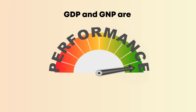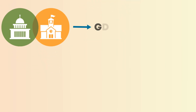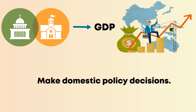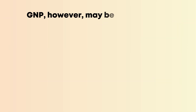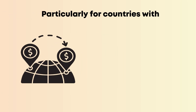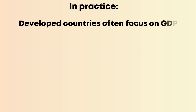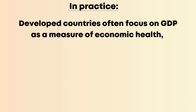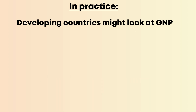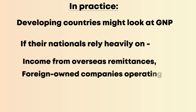GDP and GNP are crucial economic performance indicators, but they are used in different contexts. Policymakers may use GDP to assess a country's overall economic activity and make domestic policy decisions. GNP, however, may be more relevant when assessing the income of residents, particularly for countries with significant foreign investments or multinational corporations. In practice, developed countries often focus on GDP as a measure of economic health because they usually have balanced domestic and foreign investment flows. Developing countries might look at GNP more closely if their nationals rely heavily on income from overseas remittances or foreign-owned companies operating domestically.